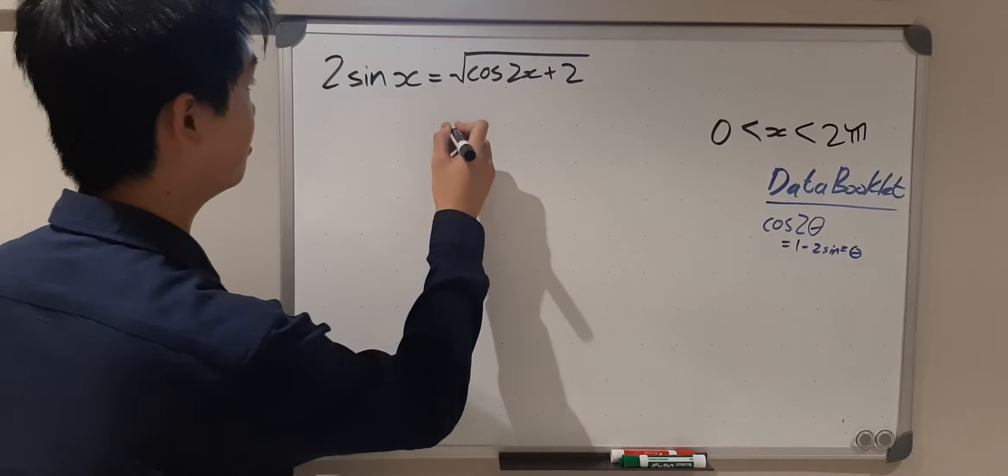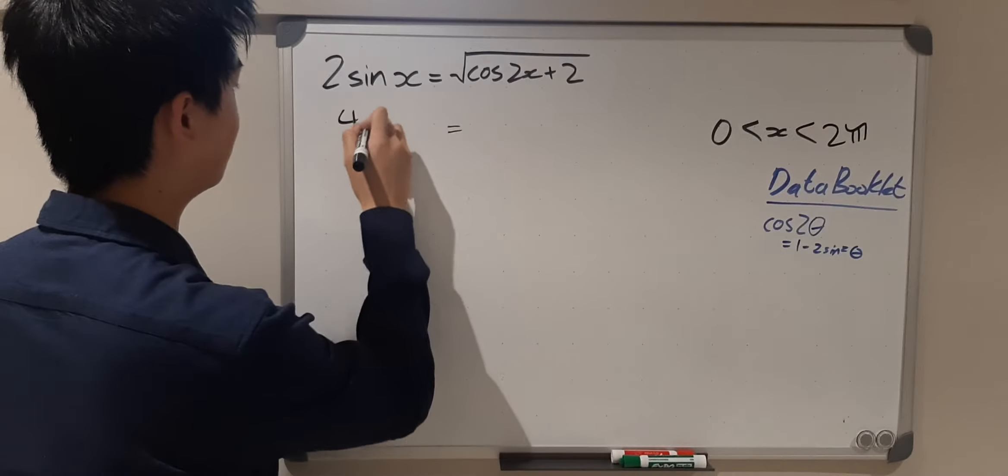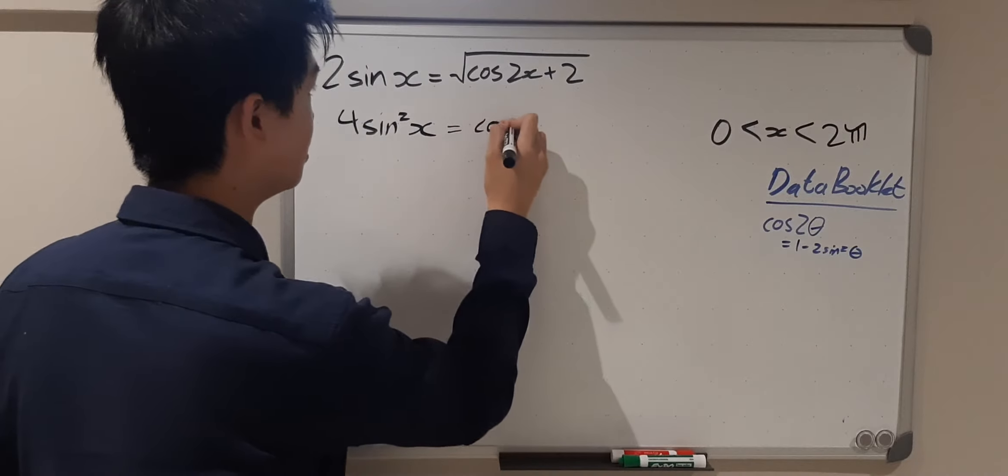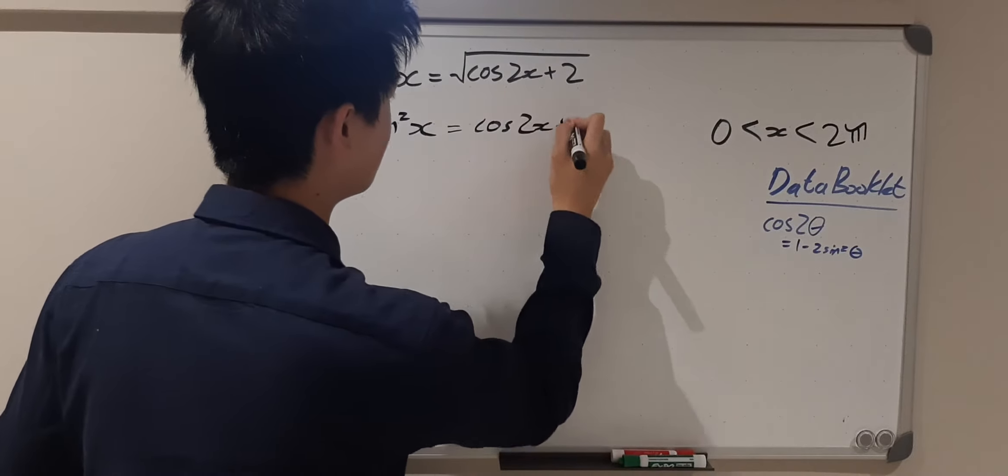First we want to get rid of that square root, so we're going to square both sides. So 4sin²(x) = cos(2x) + 2.